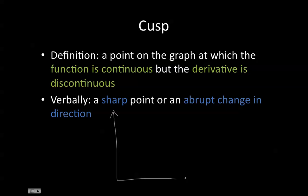For example, if I had a function that looked like this, you know that this function is continuous, but over here at this point the derivative is discontinuous because you can't really draw a tangent line at this point. Therefore, this point over here represents a cusp.